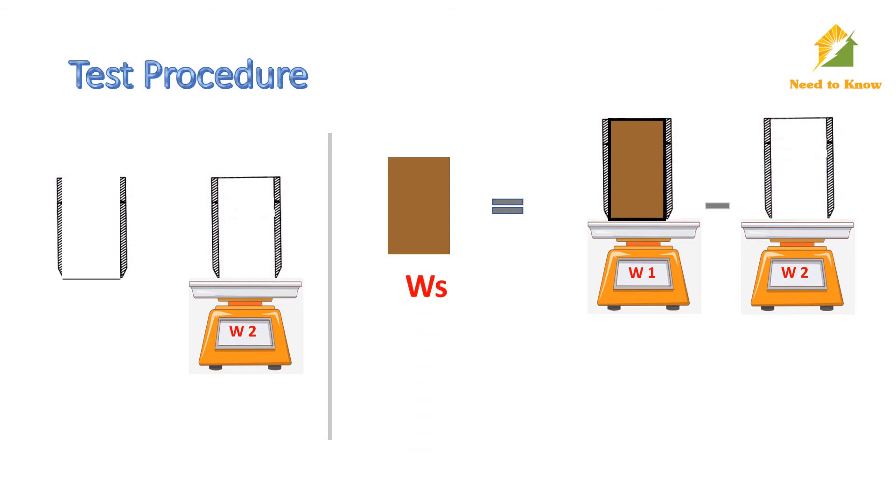From the dimensions of the core chamber, we determine volume of the soil using this formula, where R is the radius and H is the height of the core chamber.